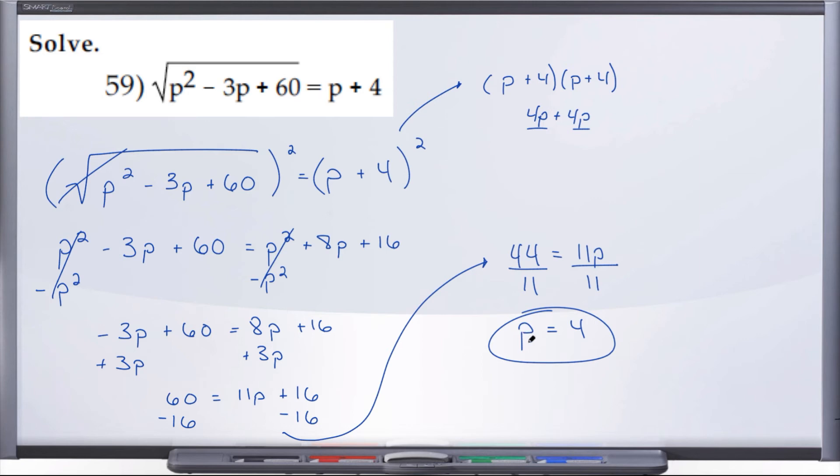All right, again, 59 is one of the problems you can check to see whether your solution is correct. So let's take our p equals 4 and plug it in and see what happens.